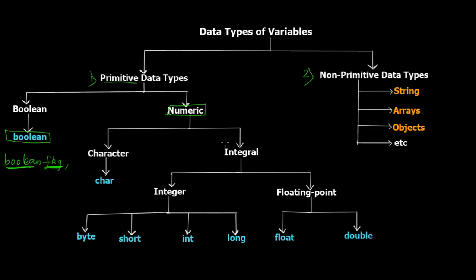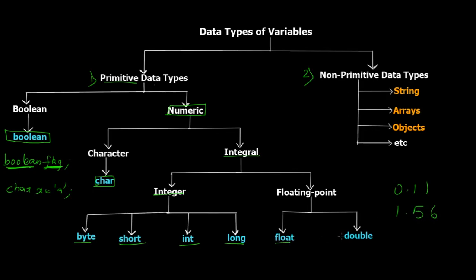In the numeric category we have character and integral parts. For character we have char, which stores a single character. Then we have integral types dealing with numbers, divided into integers and floating points. Floating points are fractional numbers involving a decimal point. For integers we have byte, short, int, and long — these are essentially the same but differ in size: long stores larger numbers than int, short stores smaller, and byte is smaller still. For floating points we have float and double — float stores smaller fractional numbers and double stores larger fractional values.